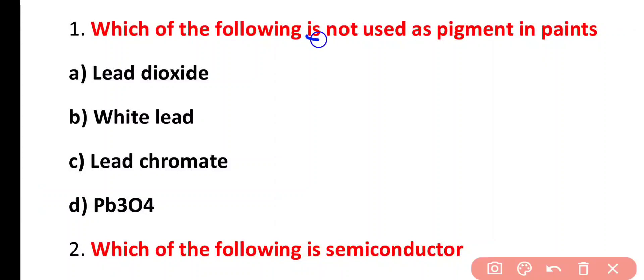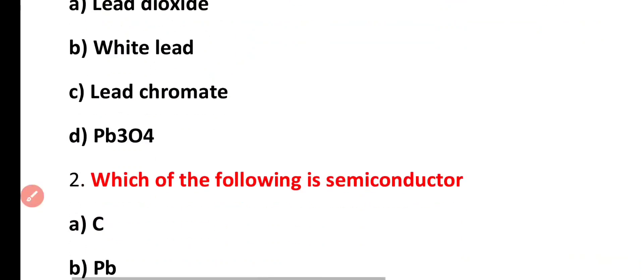Question number 1. Which of the following is not used as a pigment in paints? Lead dioxide, white lead, lead chromate, PB3O4. Correct answer is option A. Lead dioxide is not used as a pigment in paints.